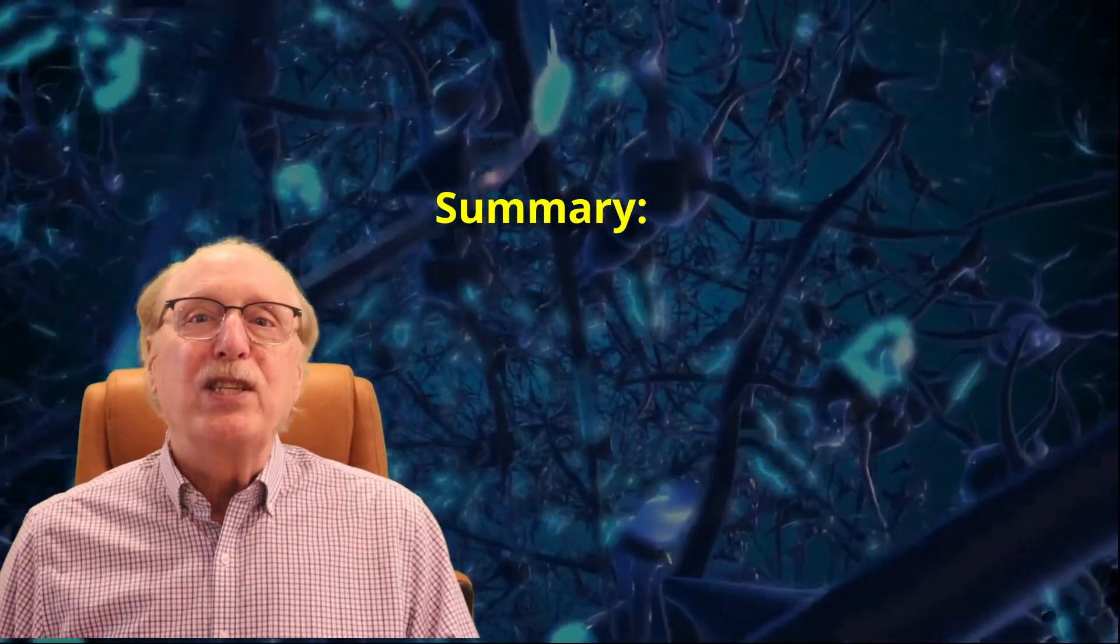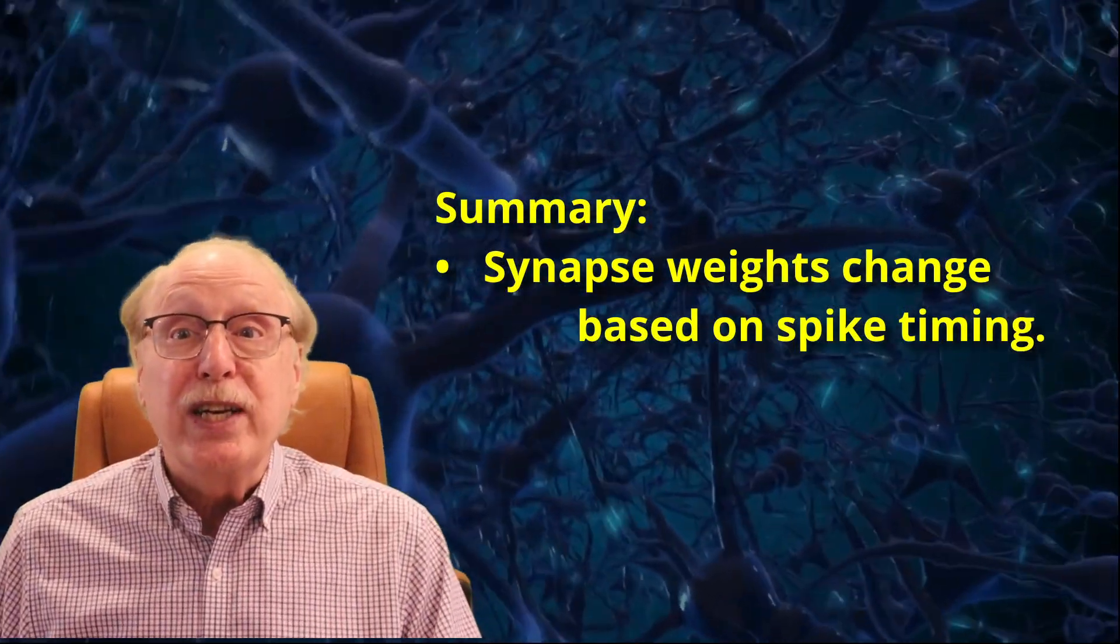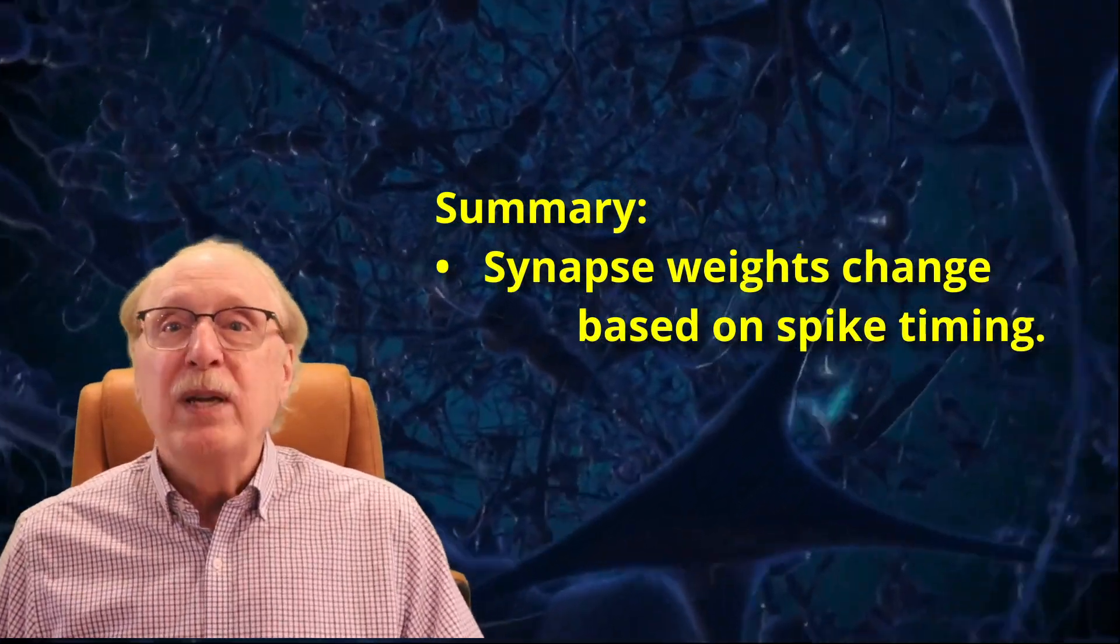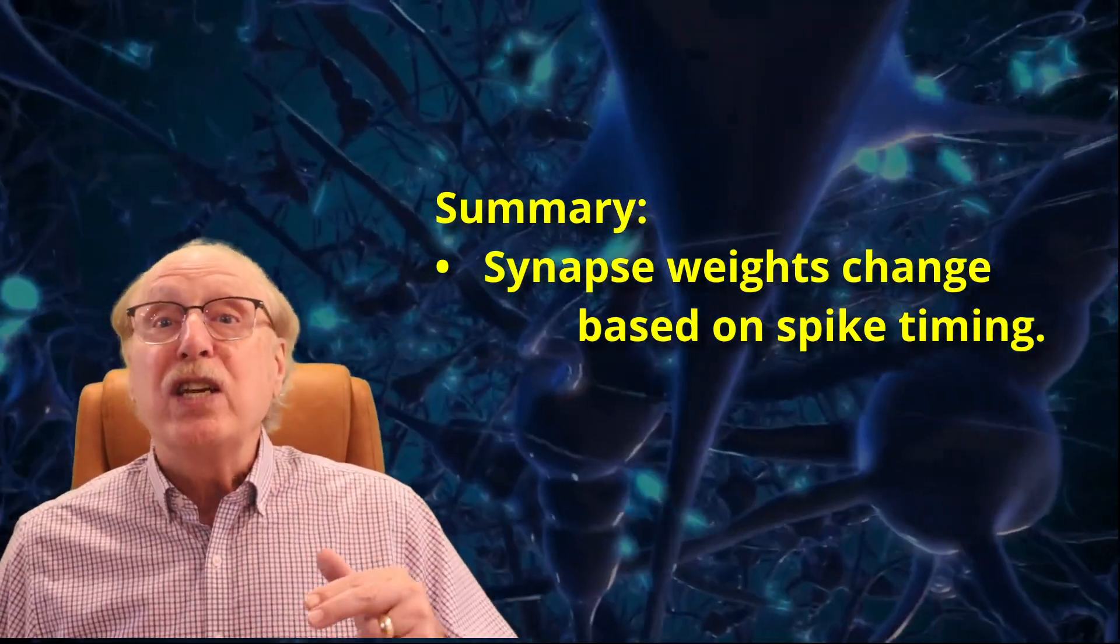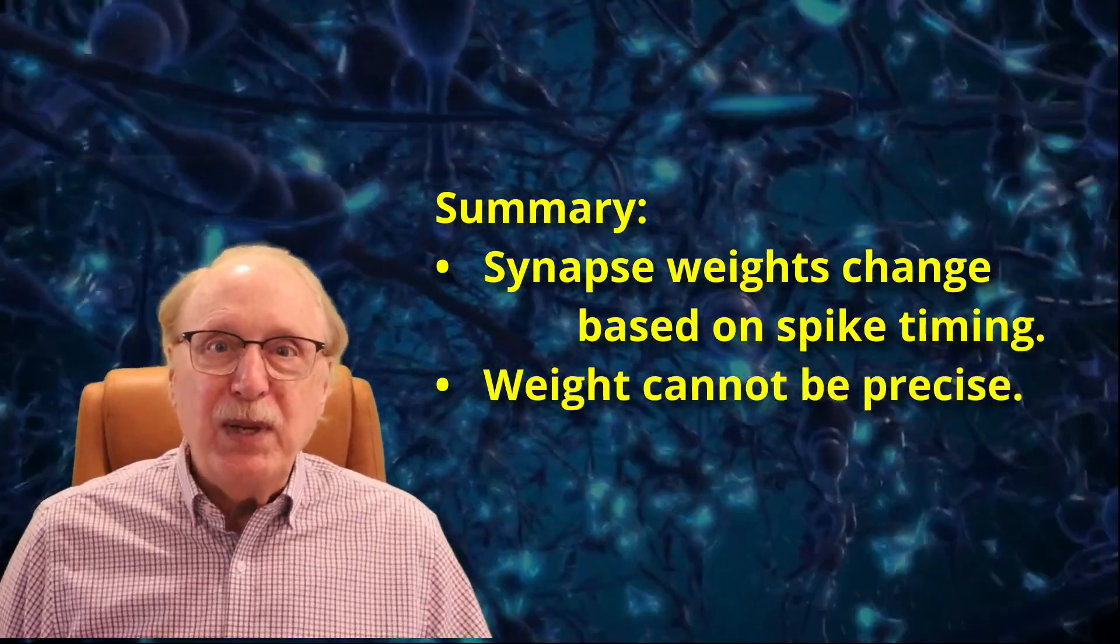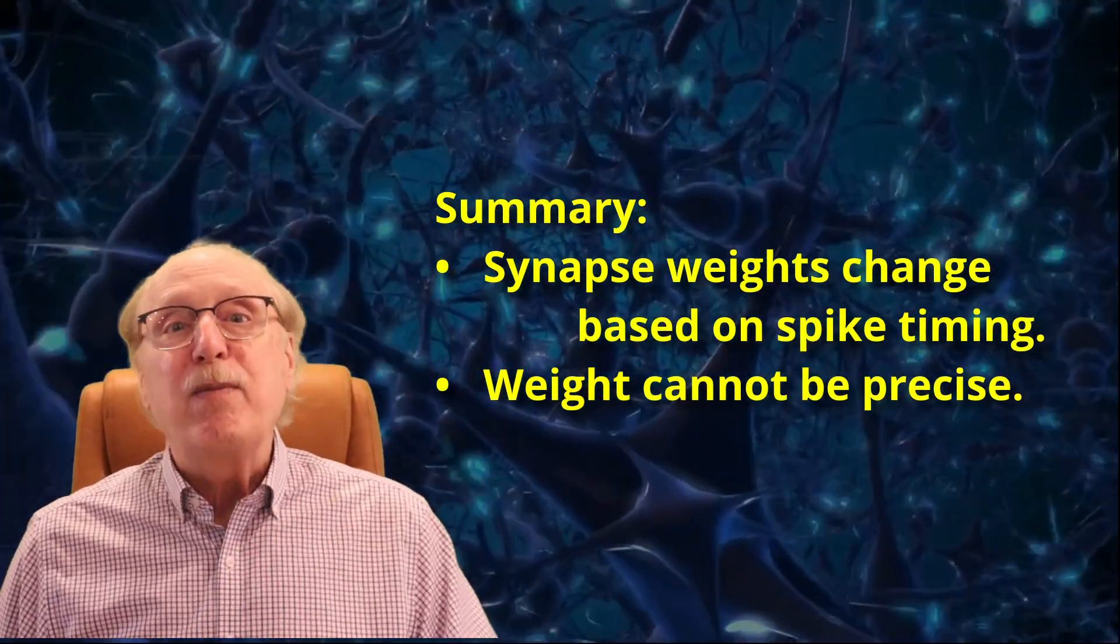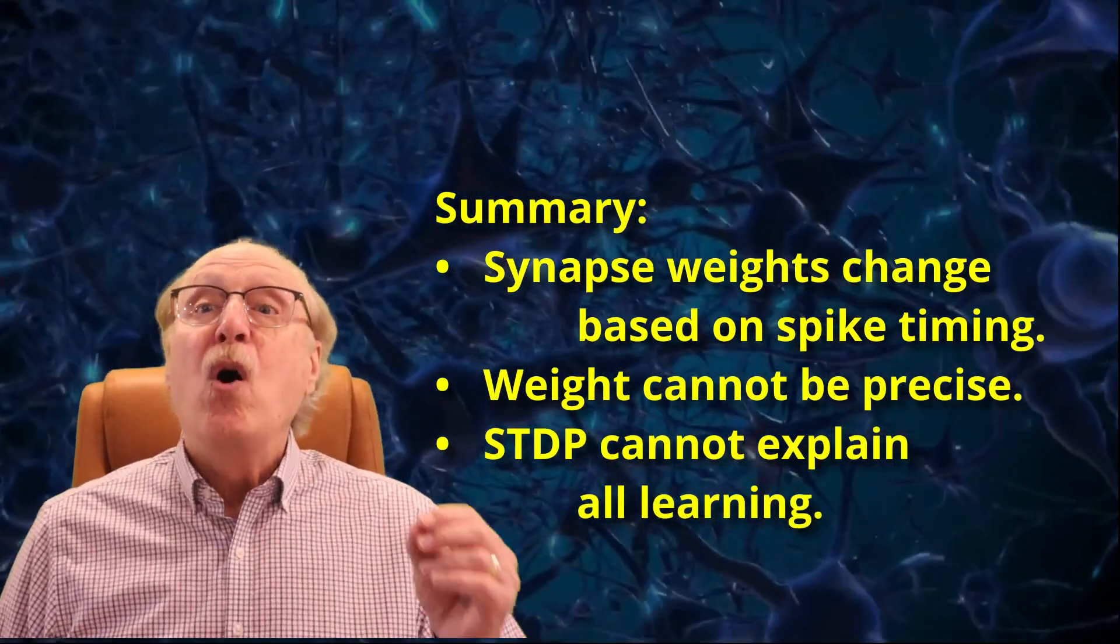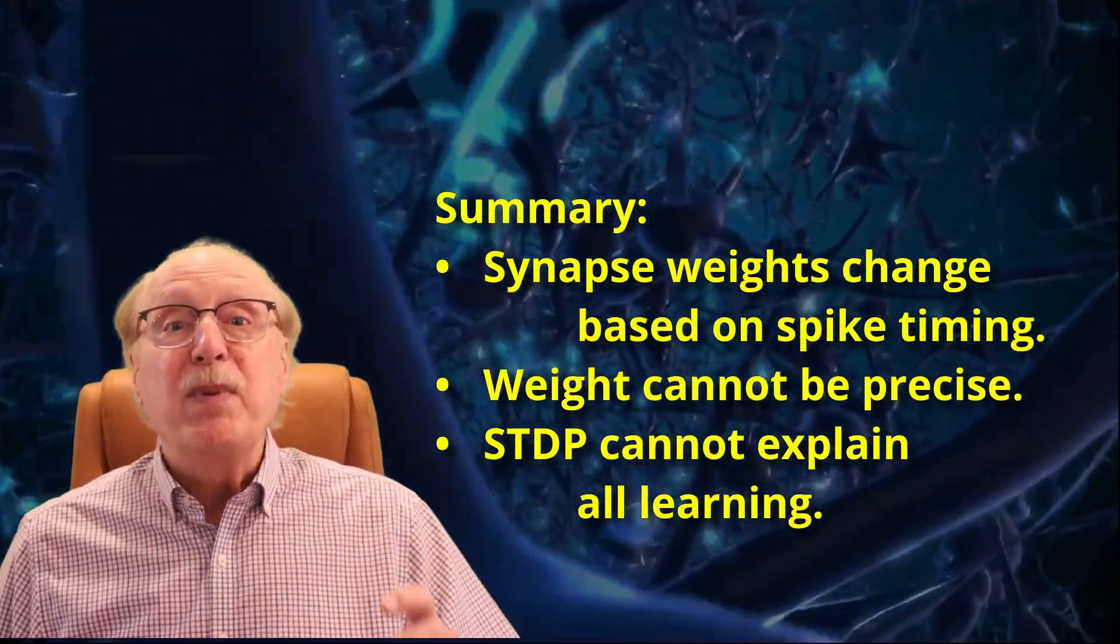So let's summarize the key points I've presented about Hebbian learning. For background, synapses interconnecting neurons have a size or a weight which impacts the firing of the target neuron. This weight can be modified according to the Hebbian rule, but that idealized rule isn't as straightforward as it might seem at first glance. Weights cannot be set with precision and synapse weights tend toward the extremes, either at their maximum value or at a value too small to have any influence. Conclusion? Although Hebbian learning explains many things, it cannot be the entire picture.